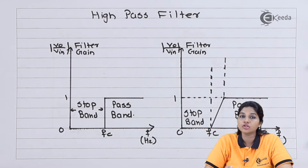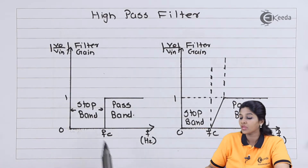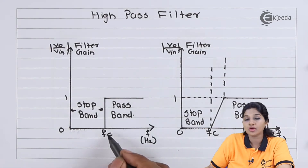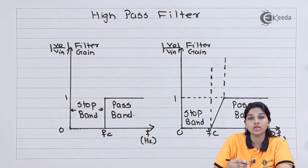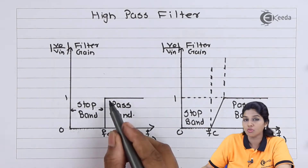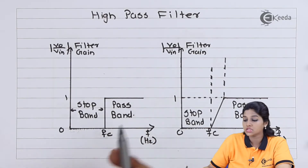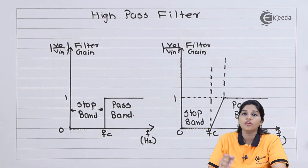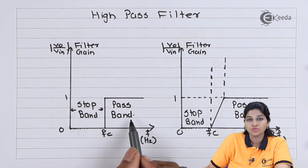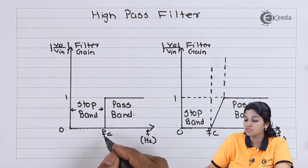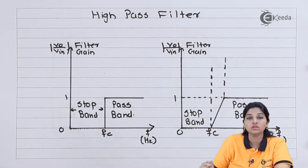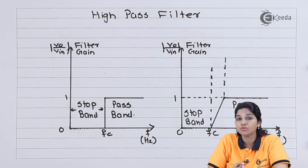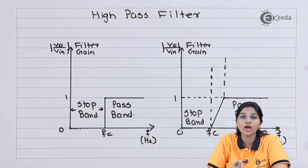The ideal response of the high pass filter looks like: from 0 to fc, we have a stop band. At f equals fc, the gain increases from 0 to 1, and above fc the band of filter is passed by the filter, therefore that band is called the pass band. Here also, at f equals fc, the gain makes a sudden transition from 0 to 1, but that will happen only in case of ideal filter.